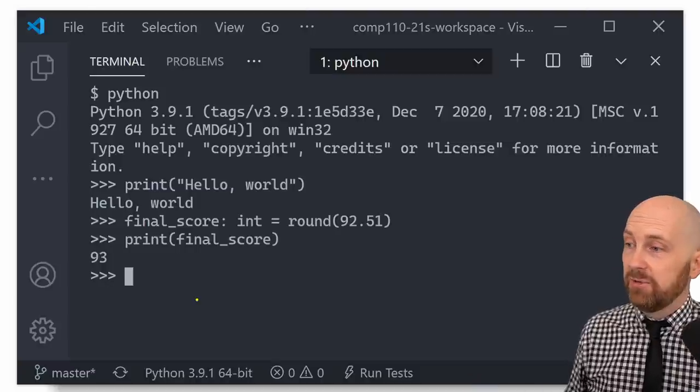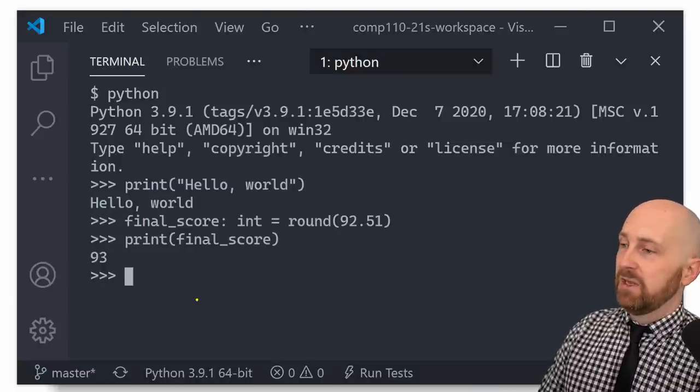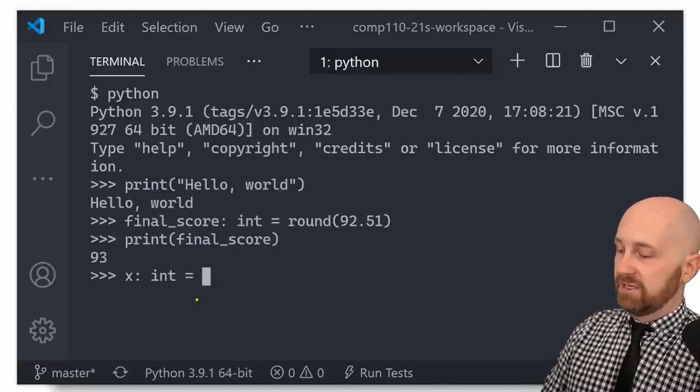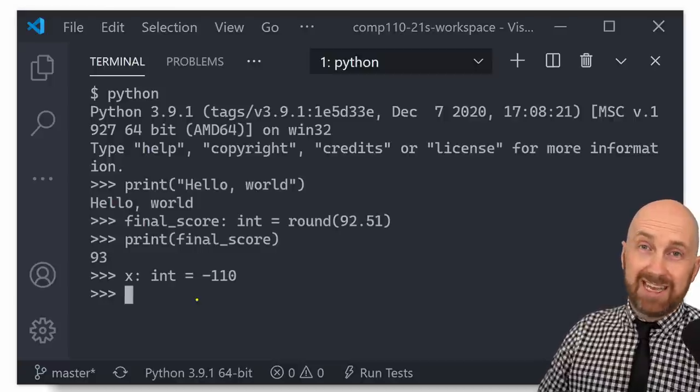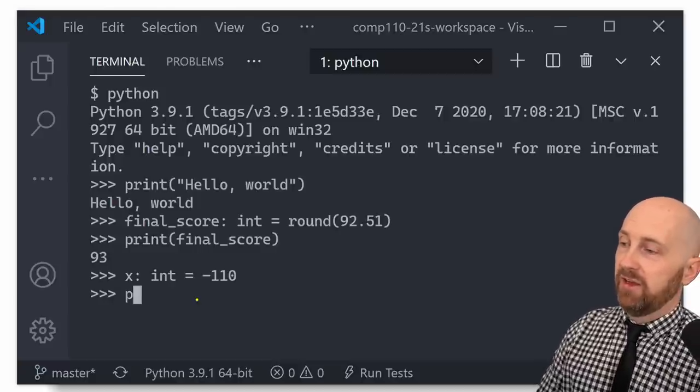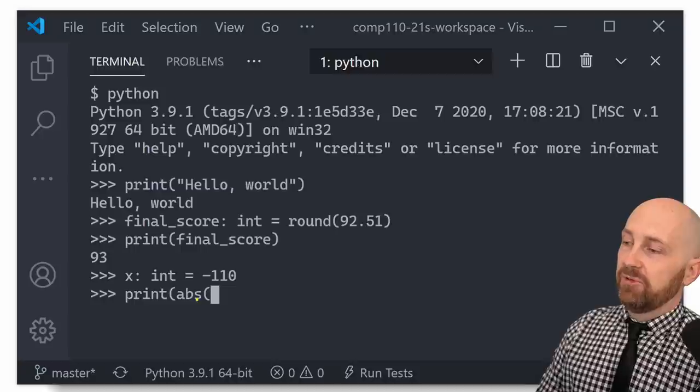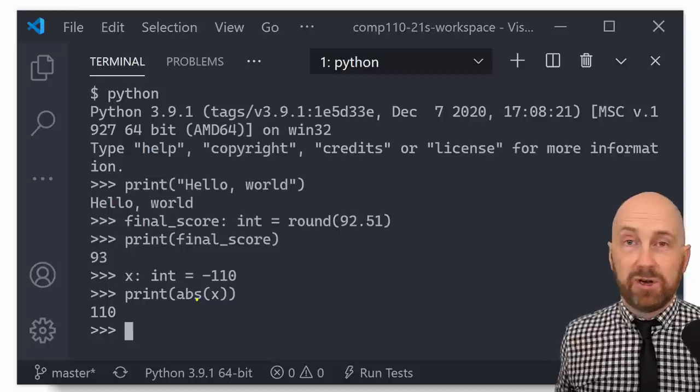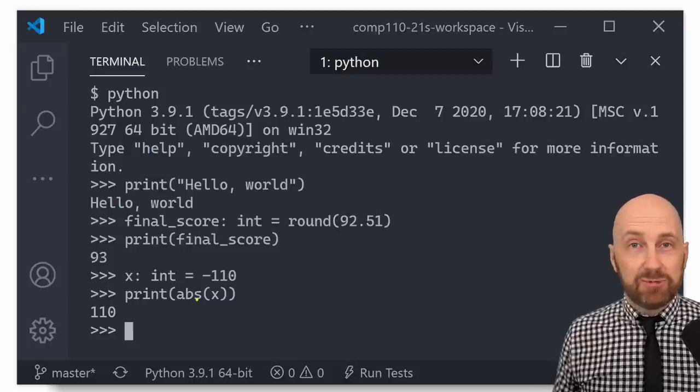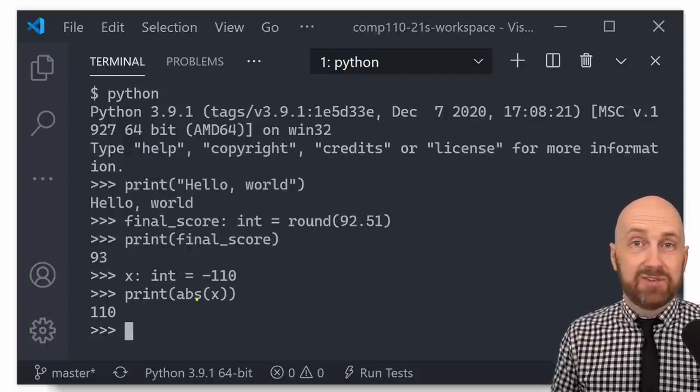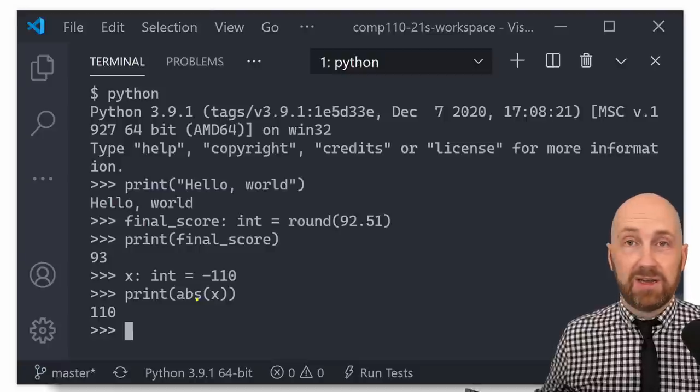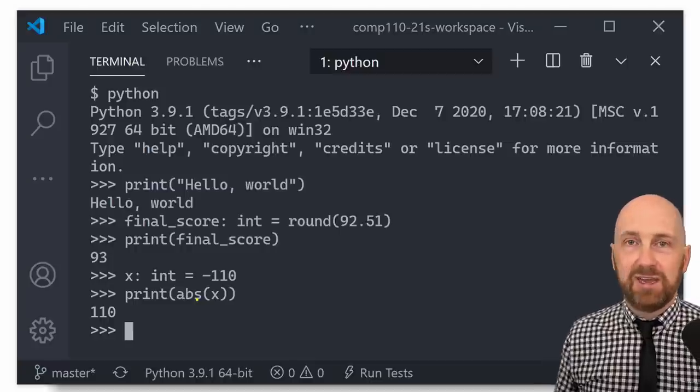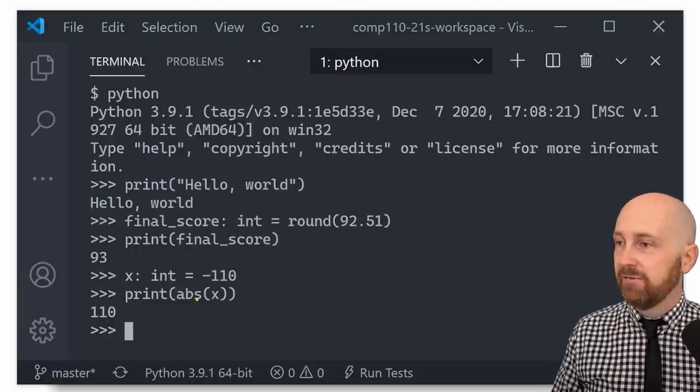One other quick example that we can use is absolute value. So absolute value is, say we have a number like X, that's an integer, and let's say that it's negative 110. Well, what is the absolute value of negative 110? Well, we can try using the absolute value function, which is abs in Python and abs of X is 110, right? Absolute value is the distance of some point away from zero on a number line and negative 110 is 110 units away. It just so happens to be in the negative direction.